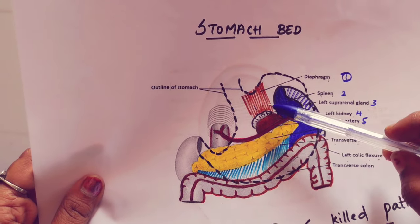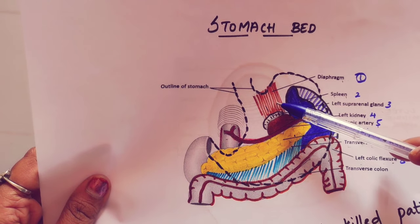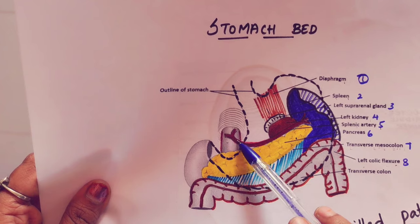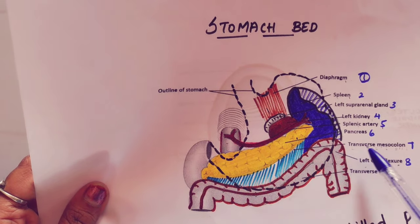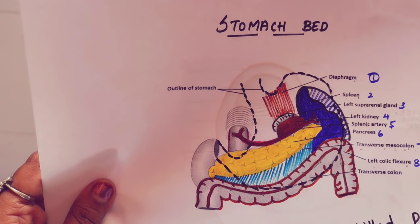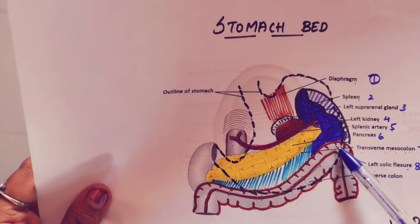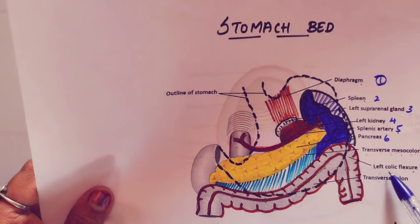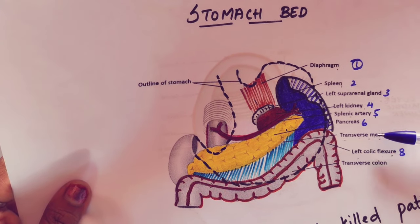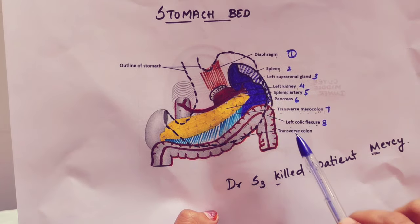Looking at the diagram: the diaphragm is shown in brown color. Then the spleen. The third structure is the left kidney and left suprarenal gland. Next is the splenic artery — this is the celiac trunk, and this is the splenic artery. Then the transverse mesocolon, which is a peritoneal fold. Next is the left colic flexure.